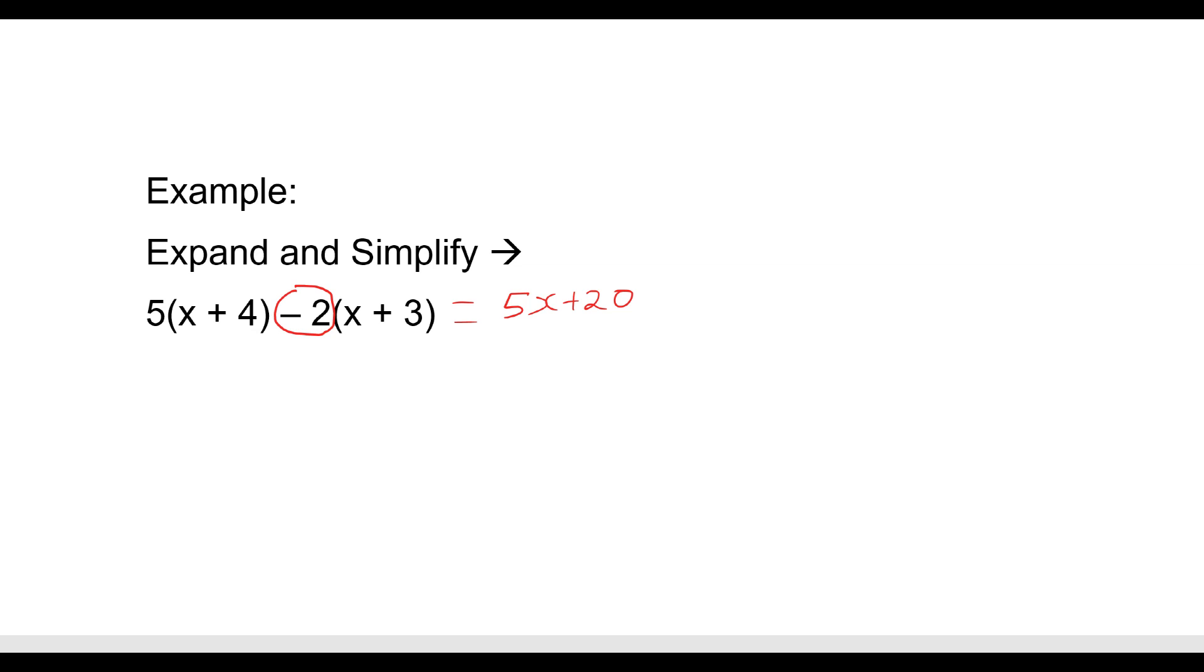We then make sure that we're paying attention to the minus in front of that 2. So to expand the second bracket, we can consider it as minus 2 times X, which will give us minus 2X. Minus 2 times plus 3 is minus 6.